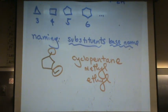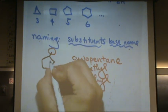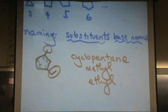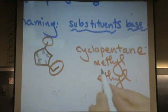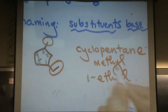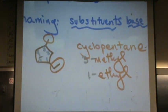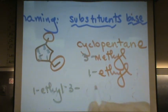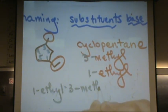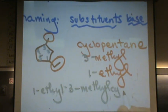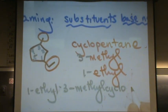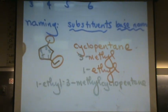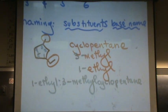So I'm going to go one, two, three, four, five. That would put a one here and a three there. So it's 1-ethyl-3-methylcyclopentane. One ethyl three methyl cyclopentane.